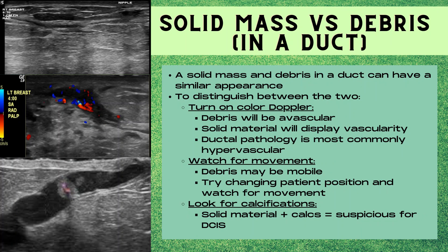Let's talk about tips and tricks for figuring out if an area inside a milk duct is debris versus a solid mass, because these can have a very similar appearance. First, turn on your color Doppler — debris is going to be avascular with no vascularity, whereas solid material will display vascularity, and most commonly ductal pathology will be hypervascular. Second, watch for movement — debris can be mobile, so try changing the patient position and watch for any movement of the contents inside the duct. Third, look for calcifications — solid material in a duct plus calcifications is suspicious for DCIS, or ductal carcinoma in situ.